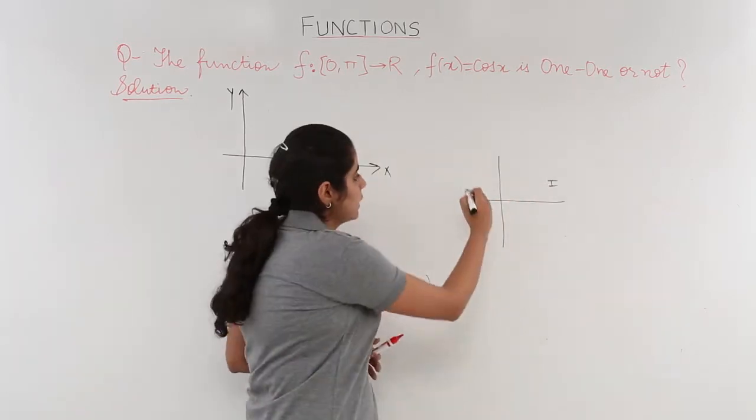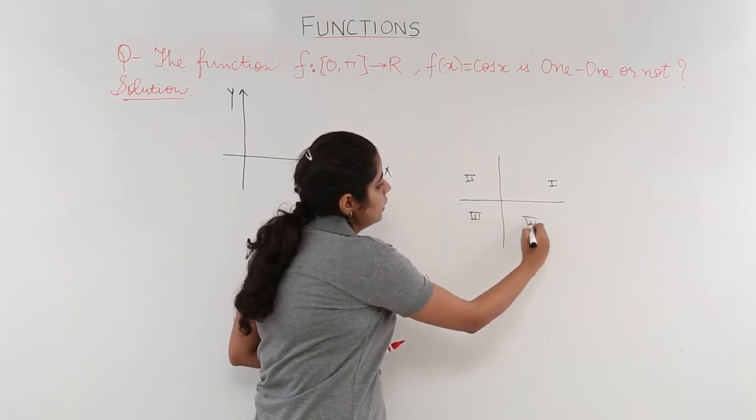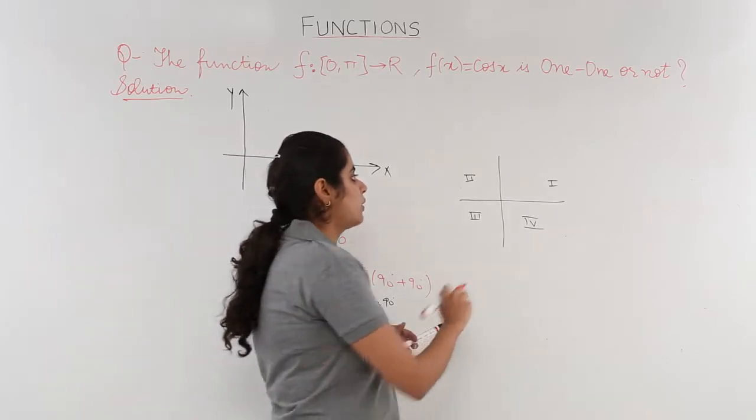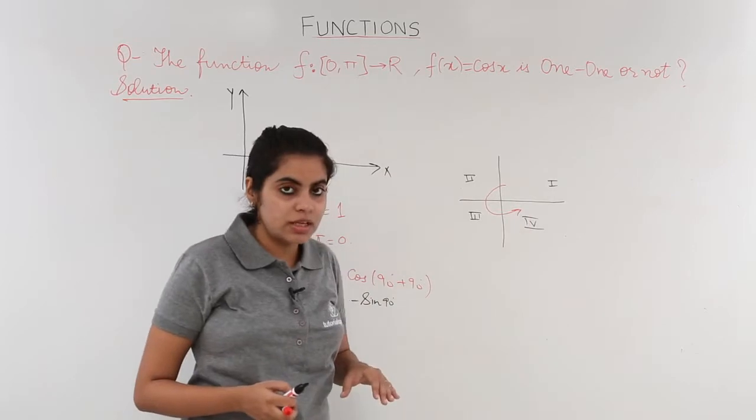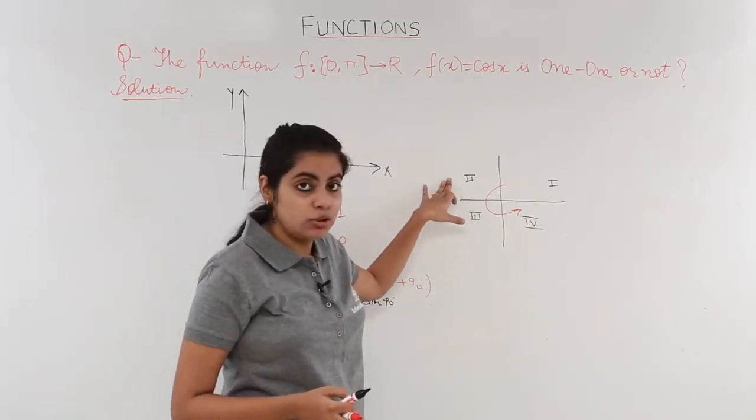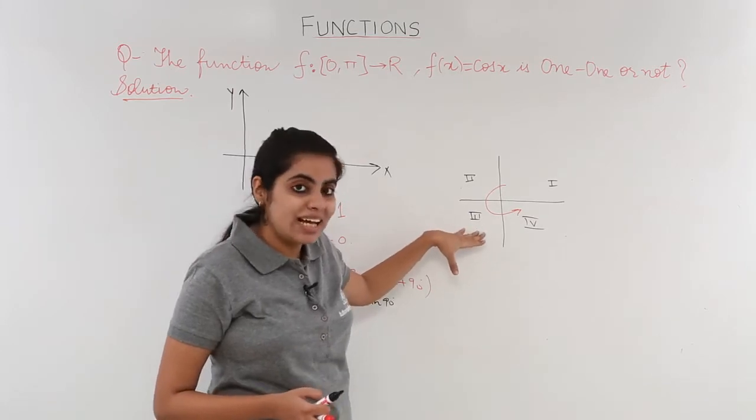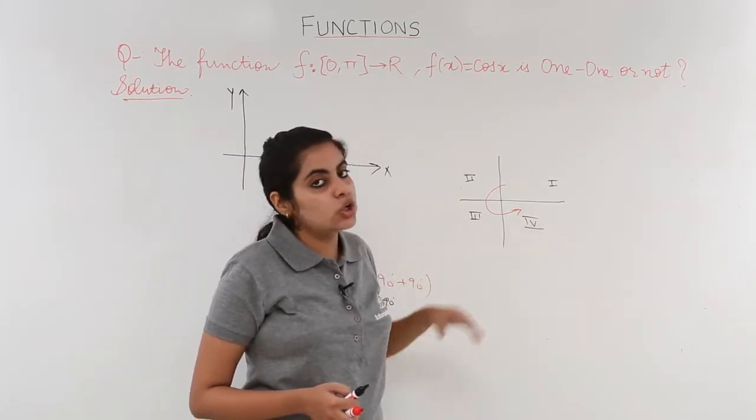This is the first quadrant, the second quadrant, the third quadrant, and the quadrants go in this manner. First quadrant has all positive, second has sine and cosecant positive, third has tan and cot positive, and fourth has cos and secant positive.